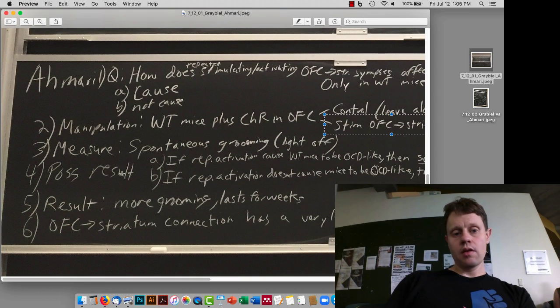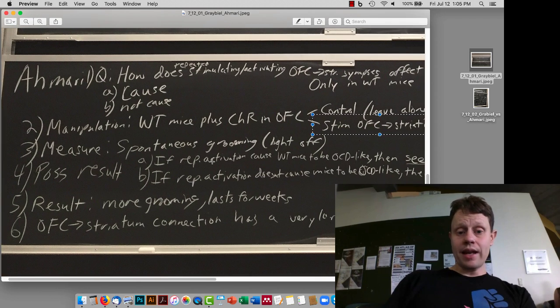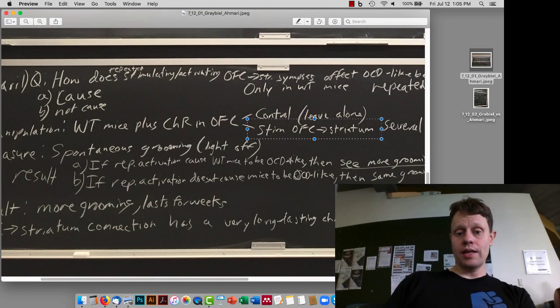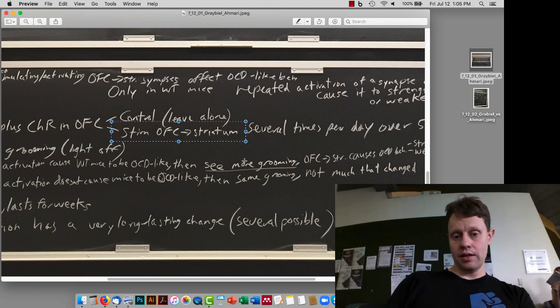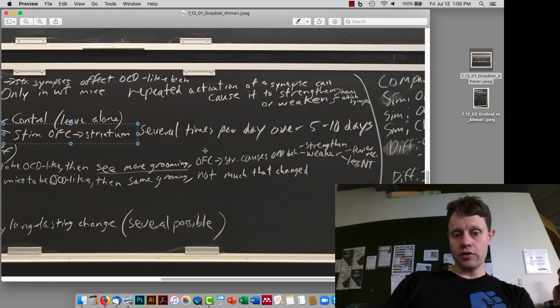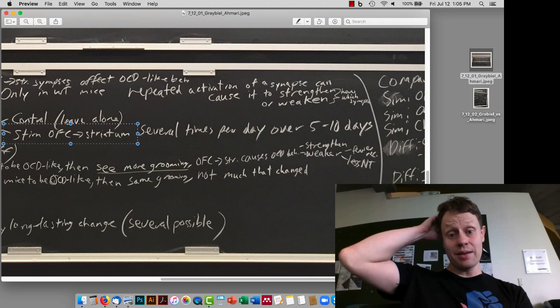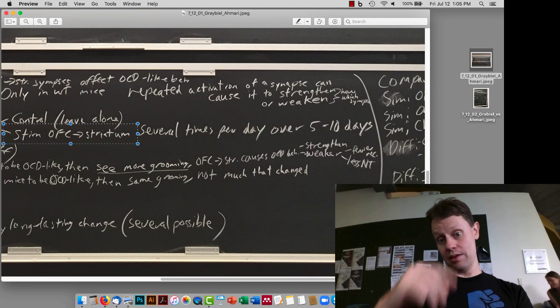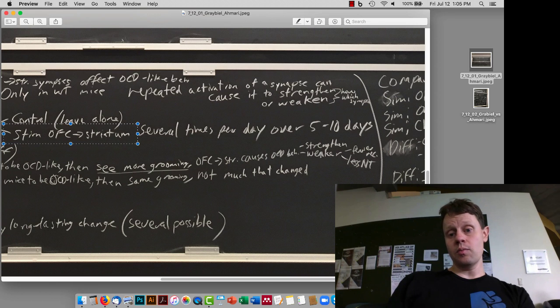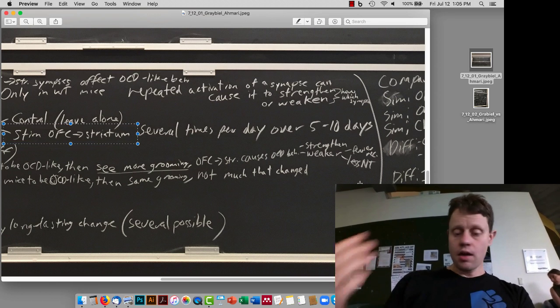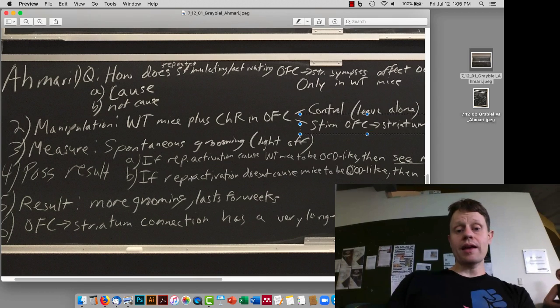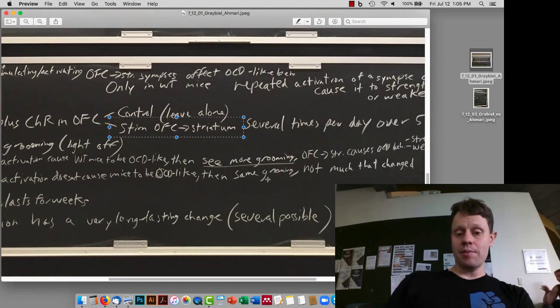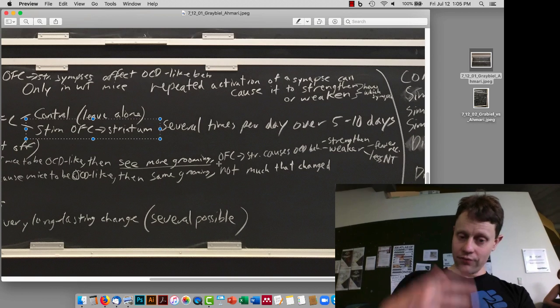So in terms of our possible results, first of all, if repeated activation causes the wild-type mice to get OCD-like symptoms, that's our first possible idea, then we're going to see more spontaneous grooming. Because the orbital frontal cortex to striatum synapse causes OCD behavior, something about that synapse is changing. Some invisible change is happening there. Maybe the synapses are getting stronger, maybe the synapses are getting weaker, and then there could be changes in receptor number, changes in neurotransmitter release, changes in the number of axons that are there, a lot of different possible changes. If repeated activation doesn't cause OCD-like symptoms, then we'll see the same amount of grooming, and then we'll infer that invisibly not much has changed.